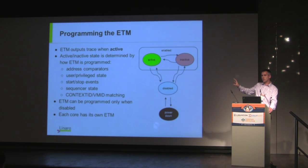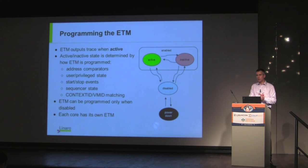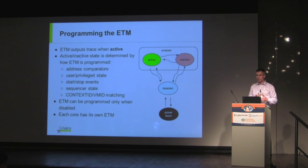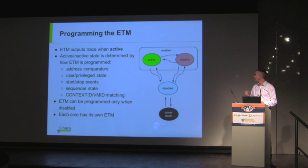ETM is our solution for core trace — for tracing instructions. ETM is a very general state machine. It can be enabled by programming it with a particular configuration, and it then switches itself on or off autonomously. It can be set up to switch on when it sees particular events — particular performance events or matching addresses. It can be set up with filters for address ranges, tracing only user space or only kernel space or both. It can filter on context ID and also on VMID, the virtual machine identifier.